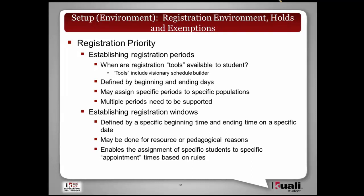The second part is establishing the registration window — a discrete time, with a beginning time and ending time on a specific date. For example, at 9 a.m. on May 25th, a student will be allowed to register. Some institutions may not use an end date — once your time starts, you may register at any time. This is also referred to as the appointment for when a student can register. It's done for a variety of reasons: on old systems, there was a load issue around how many students could register at a time, and there's also a pacing issue around giving certain students priority to get into smaller classes.